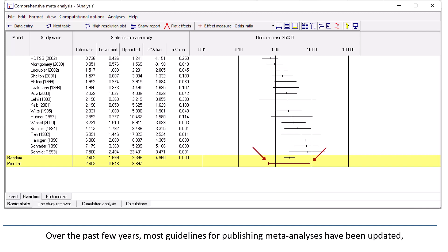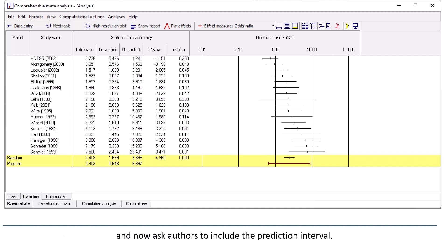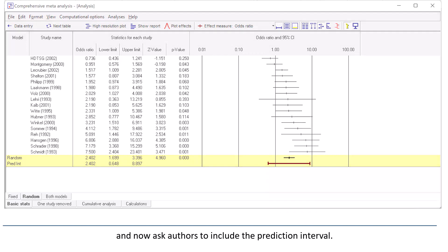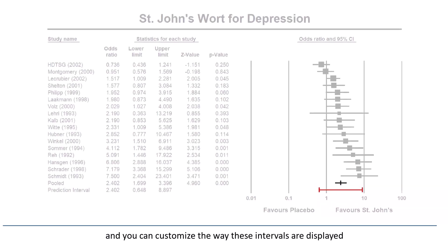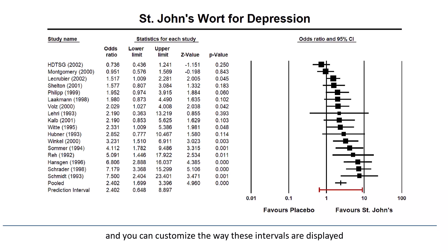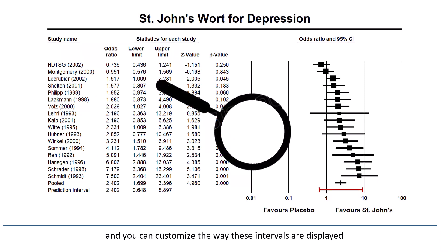Over the past few years, most guidelines for publishing meta-analyses have been updated, and now ask authors to include the prediction interval. The prediction interval can be added to the high-resolution plot, and you can customize the way these intervals are displayed.